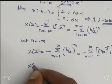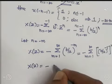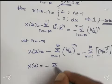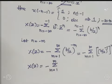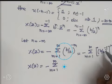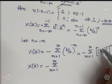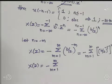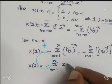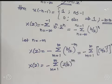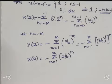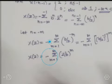Further simplifying: X(Z) = minus × summation from M = 1 to ∞ of (B/Z)^(-1) raised to M, which equals (Z/B) raised to M. We have a formula for 0 to ∞, but here the limit starts at 1 to ∞.